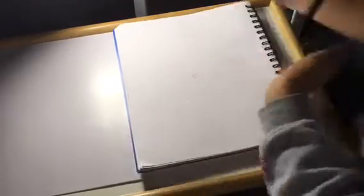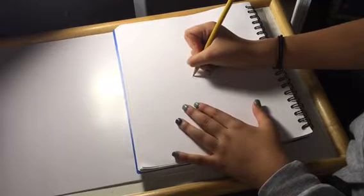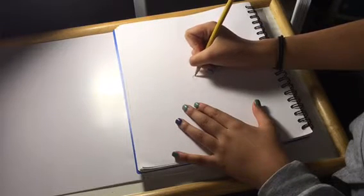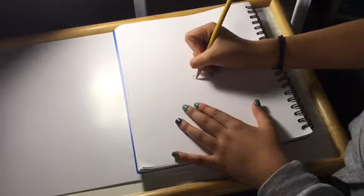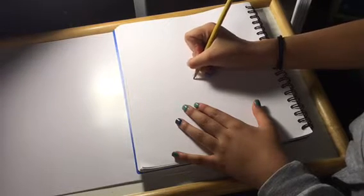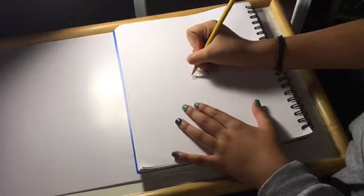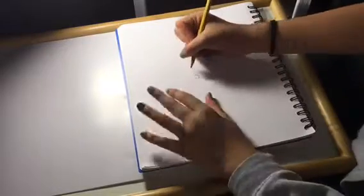And then now draw like little teensy ovals around your circle. They're like your seeds kind of, as you could see. Hopefully you guys can see that. Now that's step one.